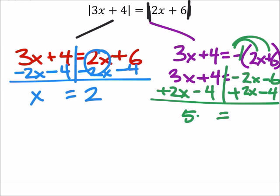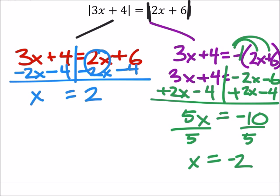So I got 5x equals negative 10. Dividing both sides by 5 gives us x is negative 2. And there's my two answers.